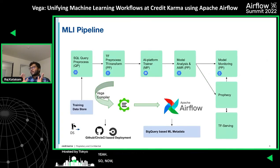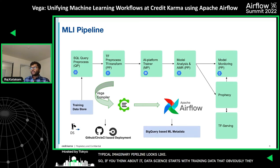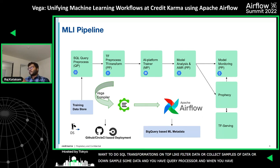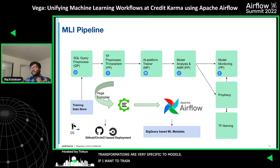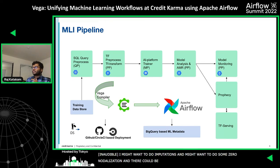Now that we have a top-level idea of what Vega is, let's go over what a typical machine learning pipeline looks like. Data science actually starts with training data, and they would want to do some SQL transformations on top of it — filtering, up-sampling, down-sampling, or wrangling the data. For that, you have Query Processor. Once those transformations are done, you might want to do some imputations on data. These transformations are specific to the models: if you want to train boosted trees, you would not do any imputation; but for neural networks, you might want to do imputation, 0-1 normalization, or z-score normalization. For that, we have Pipeline Processor.